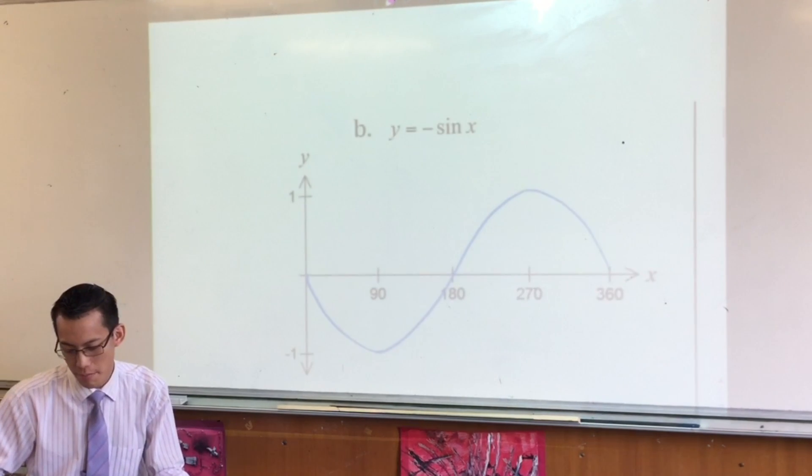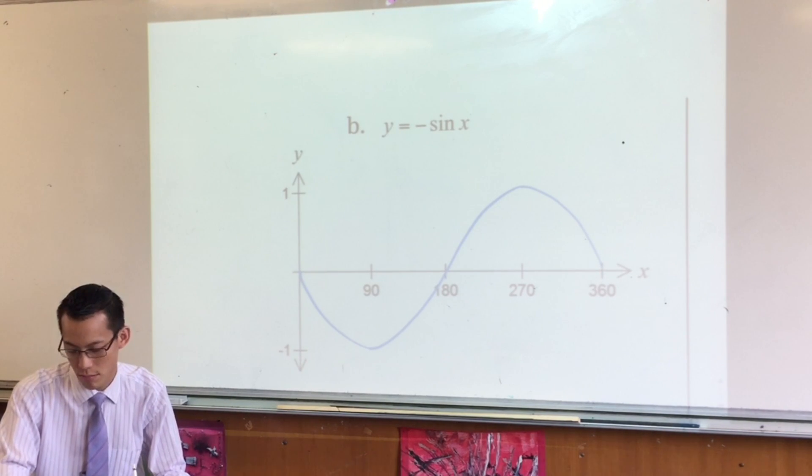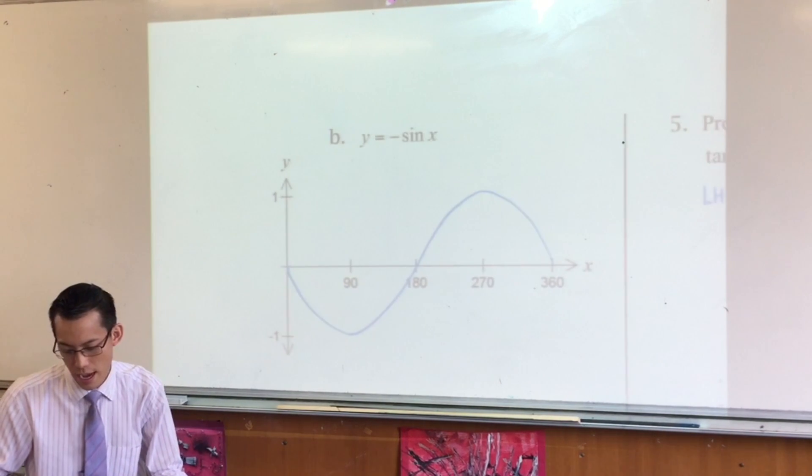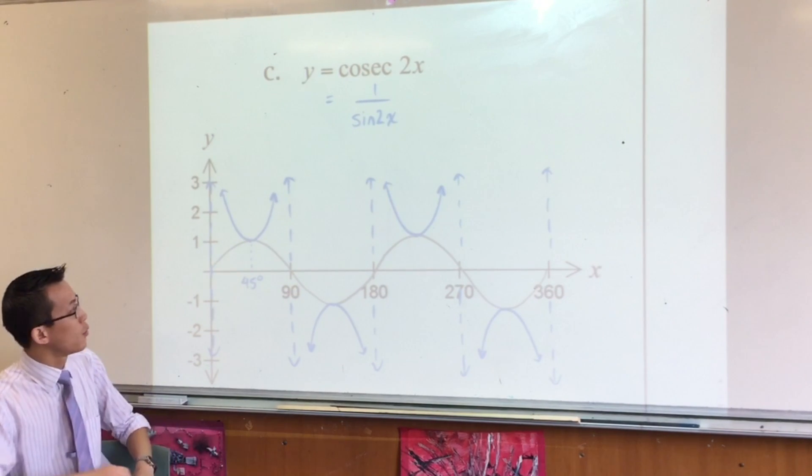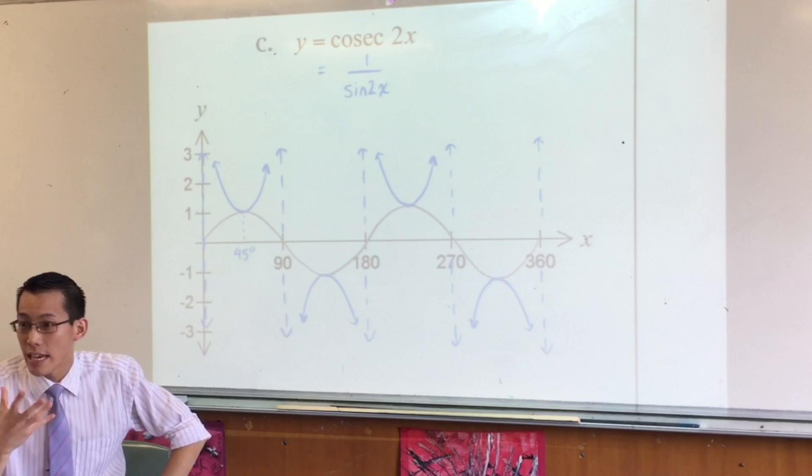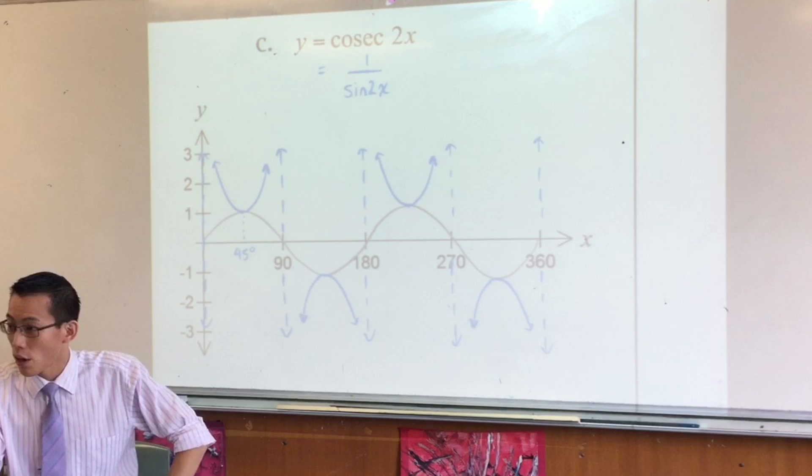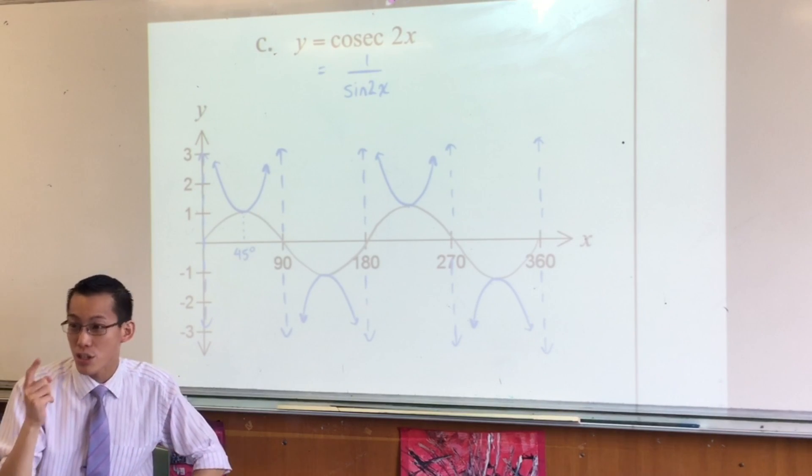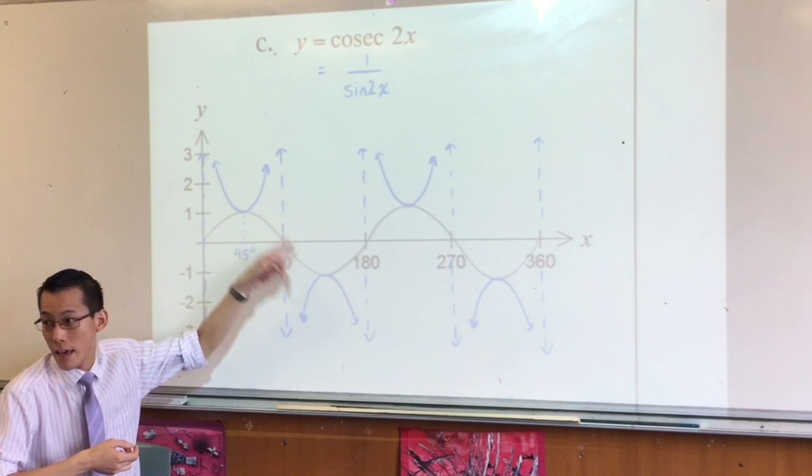Alright, let's go to the page. -sin(x), that should be pretty straightforward. Here's my cosec(2x) graph. So what I've done is I've noticed that cosec is the reciprocal of sin, right? So if it's 1 over sin(2x), the first thing I do is I draw sin(2x), right? That's my gray graph. Do you see it in there? That's sin(2x).